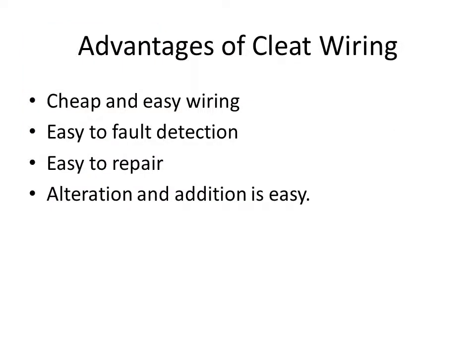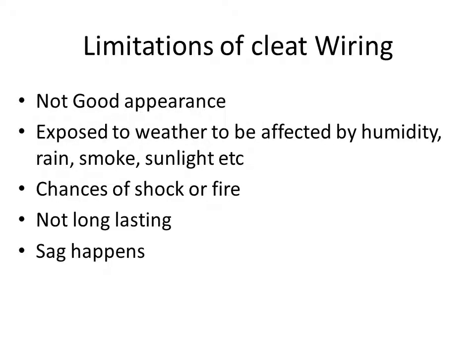Advantages of cleat wiring: it is cheap and easy, fault detection is very easy as wires are visible from outside, repair is easy, and extension or alteration is easy. Limitations: appearance is not good as the whole wiring system is visible, wires are exposed to weather and can be affected by humidity, rain, smoke, and sunlight. There are chances of shock or fire, it is not long-lasting, and sometimes sags occur.